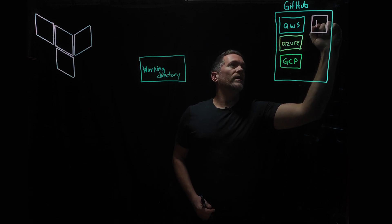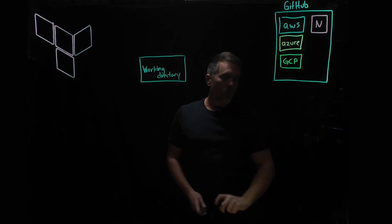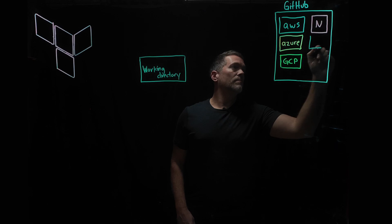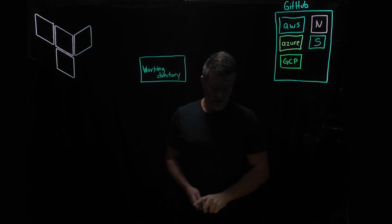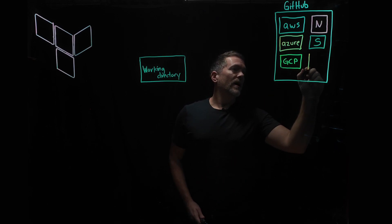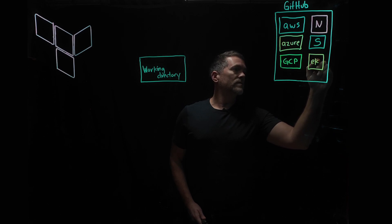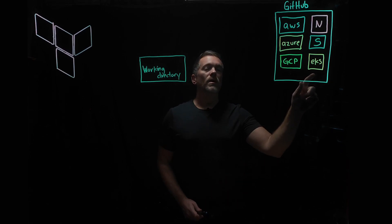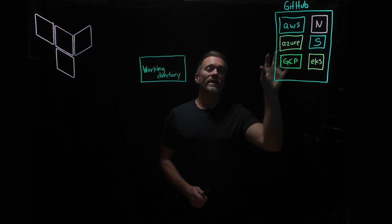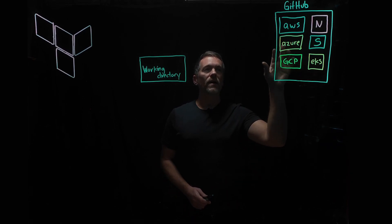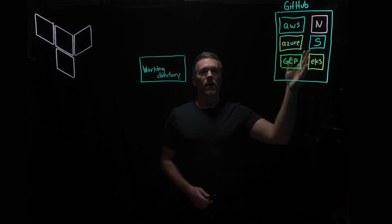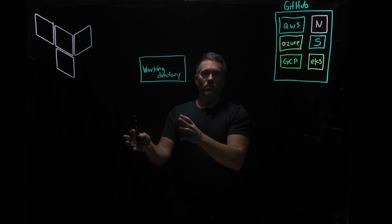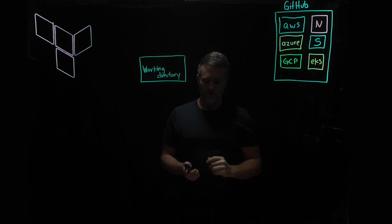On top of our providers, we also have our modules stored on GitHub as well. Our modules may include things like a network module, a subnet module, and things like a module to stand up EKS — a Kubernetes cluster. All these modules get stored out on GitHub. But in order to use Terraform, we need a copy of these providers and modules on our local machine, and that's what Terraform init does for us.